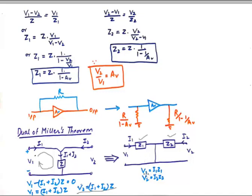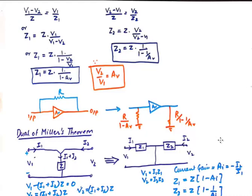Applying KVL, V1 equals I1 times Z1 and V2 equals I2 times Z2. The current gain AI is defined as the output current upon input current, and since the direction of current is opposite in the other port, it is expressed as minus I2 upon I1. Equating the currents, the decomposed Z1 comes out to be Z upon (1 minus AI) and Z2 comes out to be Z upon (1 minus 1/AI). That is how Miller's theorem plays a vital role in solving feedback networks by decomposing the feedback impedance into two components — one for input and one for output — making calculation much easier.